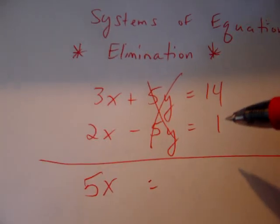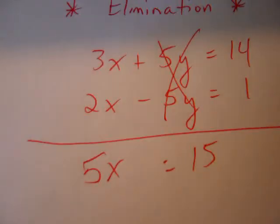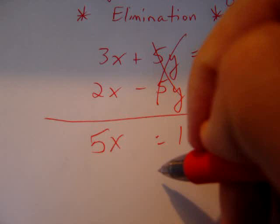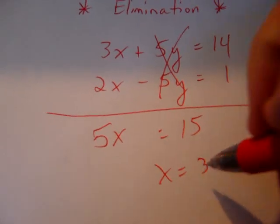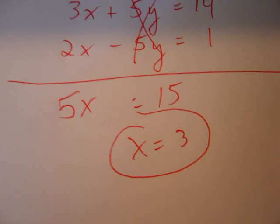Cancel to 0. And we have 14 plus 1 is 15. Therefore, we have 5x equals 15. Solving for x, you get x equals 3. Now, that is your x part of the solution.